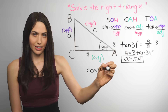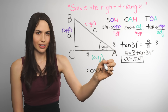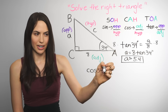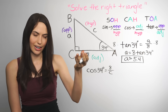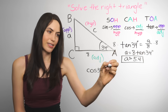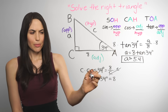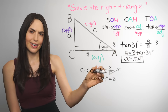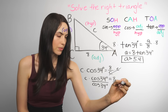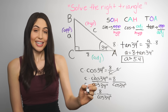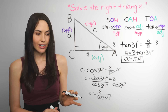You want to solve for C, but it's down in the denominator, which is different from before. To solve when the variable is in the denominator, multiply both sides by C to clear it and bring it up top. Now you have C times cosine 34 degrees equals 8. To get C alone, divide both sides by cosine 34 degrees. So C equals 8 divided by cosine 34 degrees. Put this in your calculator in degree mode, and rounding, it's roughly 9.6.